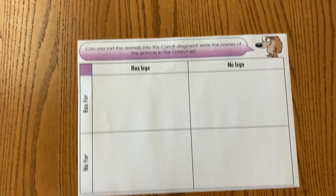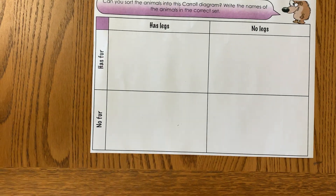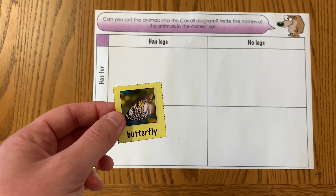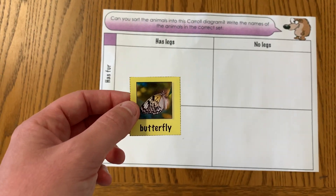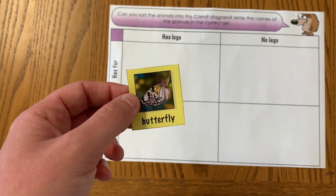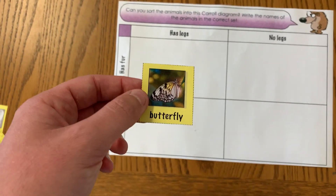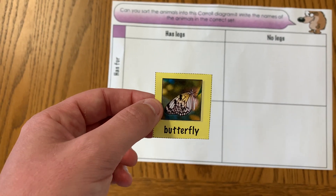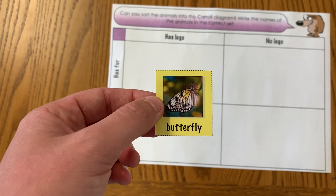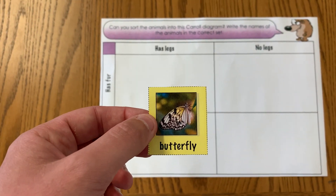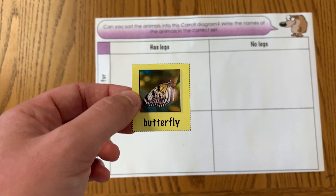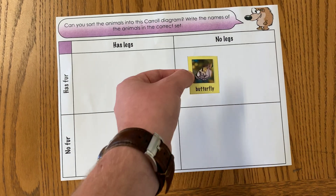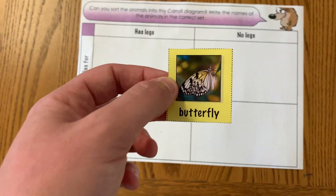What we do is we take an animal. I've printed my animals out, but you might want to draw a picture, you could write their name, or if you have a printer you could print the pictures out yourself and cut them out. And I'm going to sort them and put them into the right box.